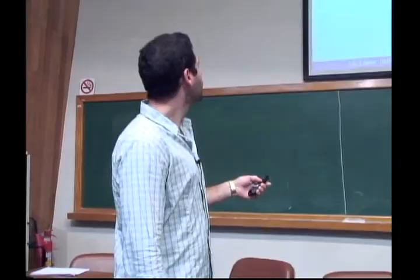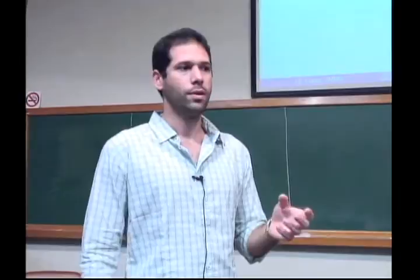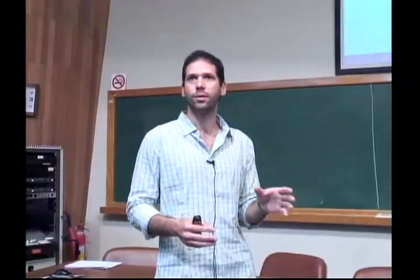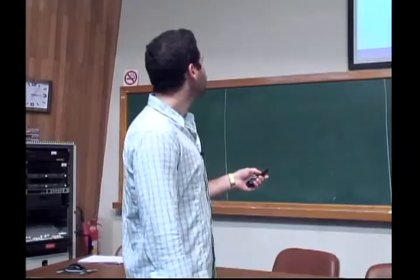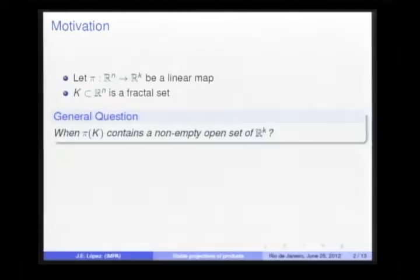The main motivation of our work is to understand when the projections of a fractal set contains a non-empty open set. To fix notations, let π from ℝⁿ to ℝᵏ be a linear map, and K a fractal subset of ℝⁿ. With these notations, our general question is as follows.